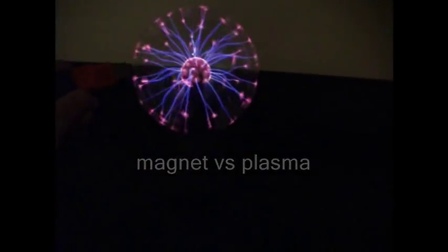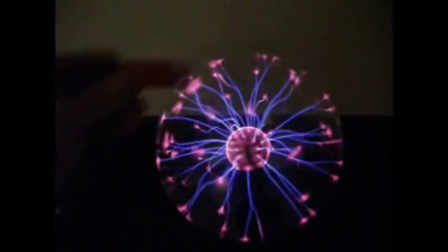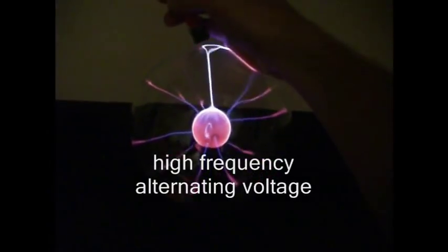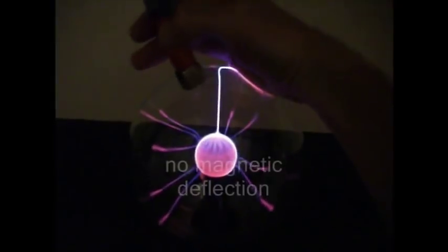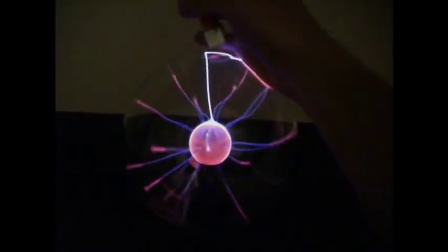Moving plasma can usually be controlled by magnetic fields, but this will not be visible for the plasma ball. It operates on a high-frequency alternating voltage, and because of this, the charges do not have time to get moving far or fast, so they will not get deflected.